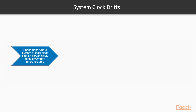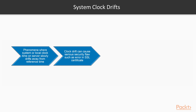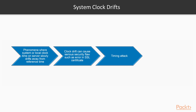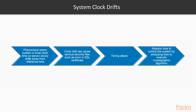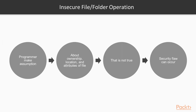System clock drift is the phenomenon where the system or local clock time on a server slowly drifts away from the reference time due to improper or missing synchronization. Over time, clock drift can cause serious security flaws such as errors in SSL certificate validation, which can be exploited by sophisticated techniques like timing attacks, where an attacker tries to take control over the system by analyzing the time taken to execute cryptographic algorithms.